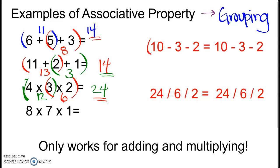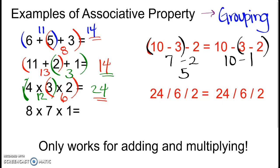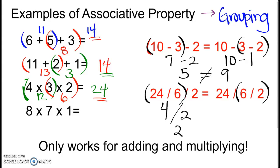But it will change your answer when you do subtracting and dividing. If I group 10 minus 3 minus 2 with parentheses around 10 and 3 first: 10 minus 3 is 7, and 7 minus 2 is 5. But if I group 3 and 2 first: 3 minus 2 is 1, and 10 minus 1 is 9 — I don't get the same answer. Or 24 divided by 6 divided by 2: grouping 24 and 6 gives 4, and 4 divided by 2 is 2. But grouping 6 and 2 first gives 3, and 24 divided by 3 is 8 — not the same answer. So the associative property only works for adding and multiplying.